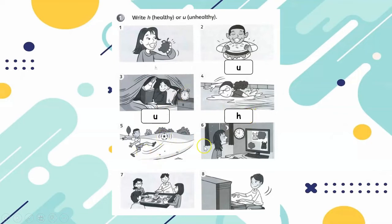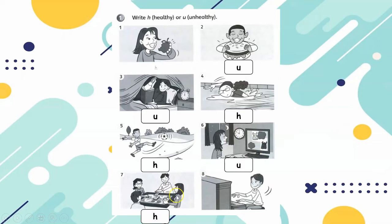He's playing football. Healthy. She's playing computer games at night. It's unhealthy. They're playing Monopoly. It's healthy.